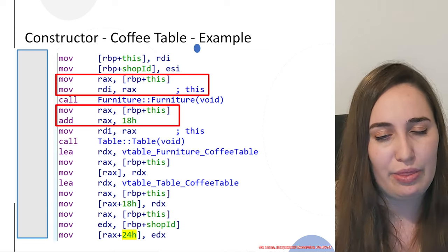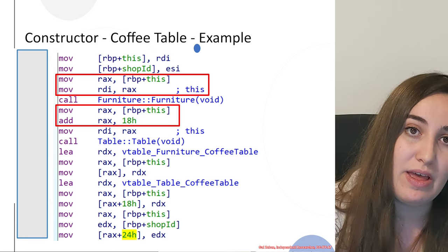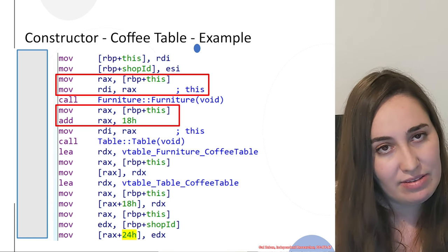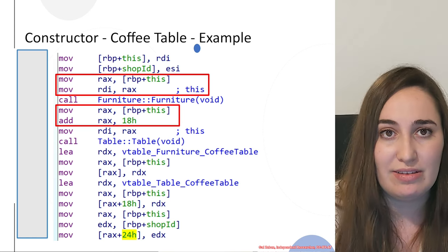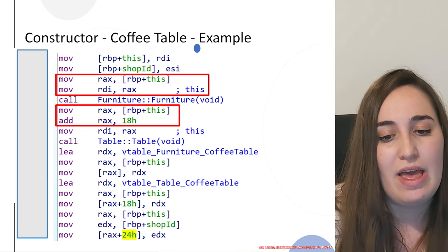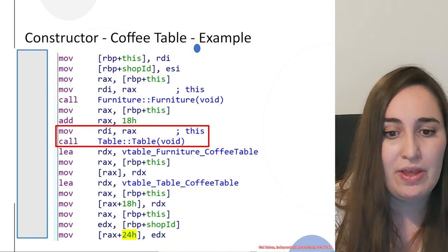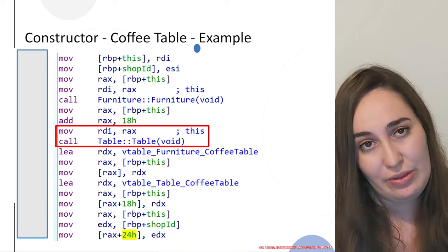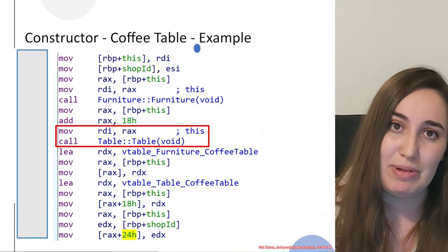After the first constructor call, the offset from the beginning of 'this' is incremented by 0x18. This is because the size of the furniture object is 0x18. Therefore, when calling the second constructor, we need to set the 'this' pointer to the correct offset. Only then can we call the second constructor. It sets the right offset into the 'this' pointer and then passes it into the table constructor.